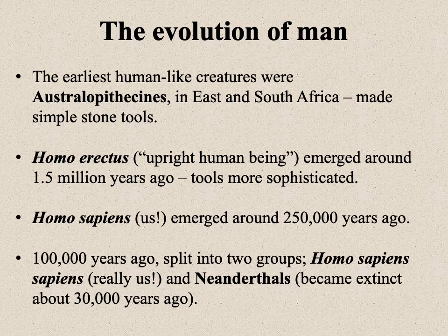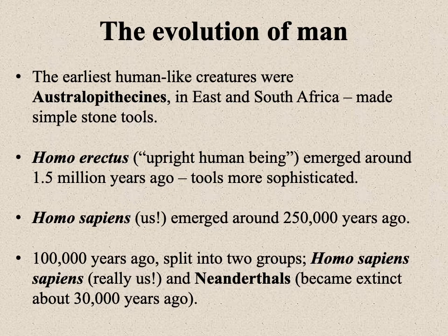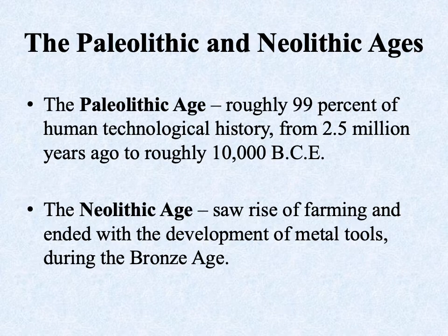Around 250,000 years ago we see Homo sapiens — pretty much us. We can divide Homo sapiens into two groups: around 100,000 years ago they appear to have split into Homo sapiens sapiens — really us — and Neanderthals. They cohabited the globe for a while, then Neanderthals became extinct about 30,000 years ago. We don't know exactly what happened, but likely Homo sapiens sapiens killed them off. We do know they could interbreed, and there is a genetic residue of Neanderthals in humankind today.